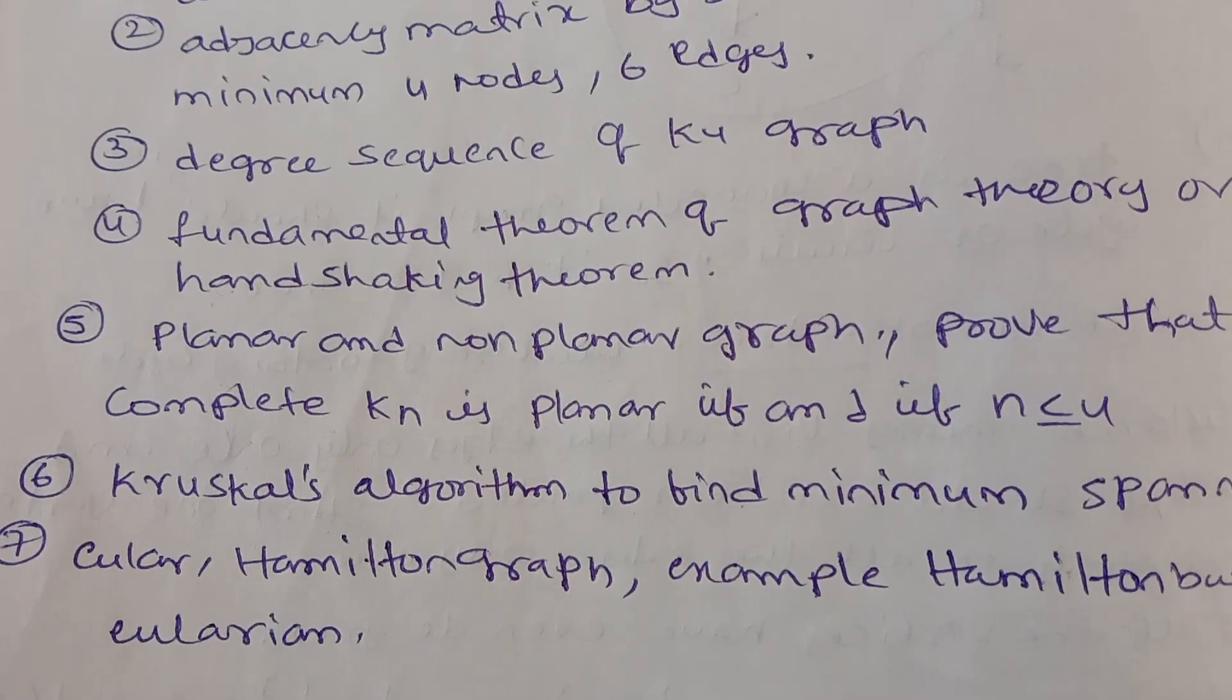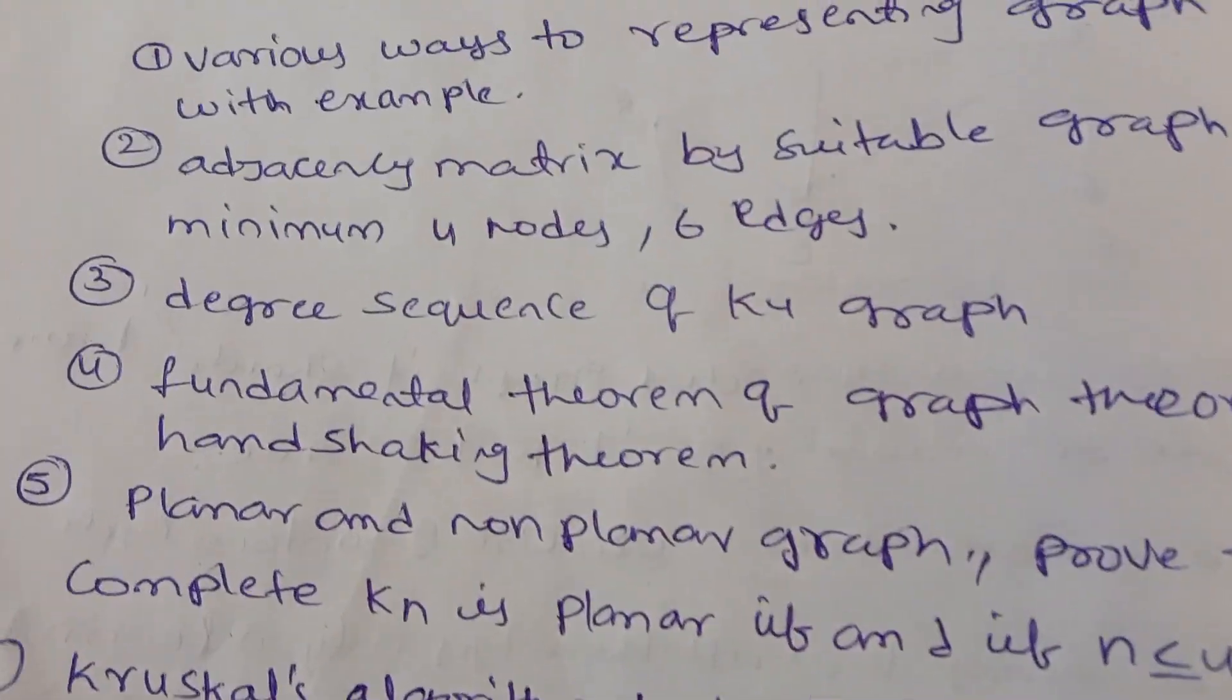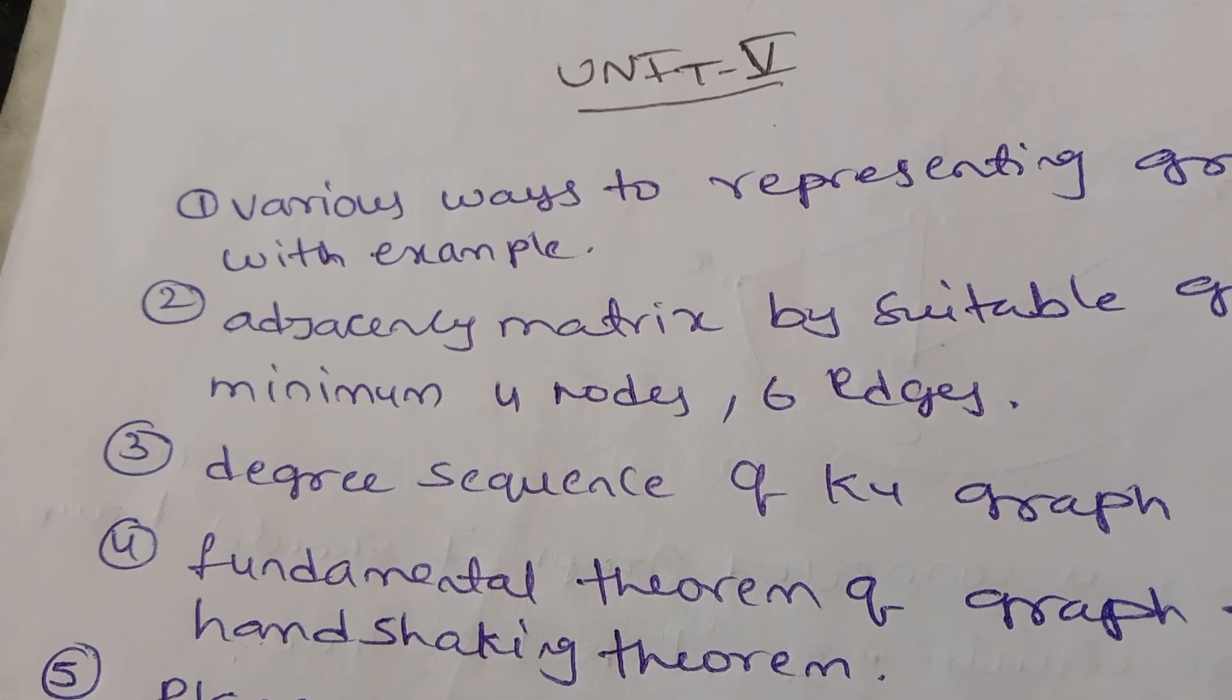Next, Euler's and Hamiltonian graphs. Example: Hamilton but not Eulerian. This is very important. Unit is fine. Like 1-1 line, 1-2 line, 2-1 line. Backlogs are the same.